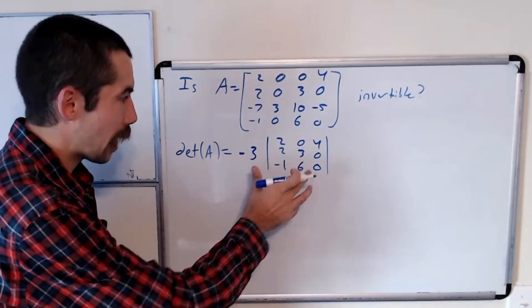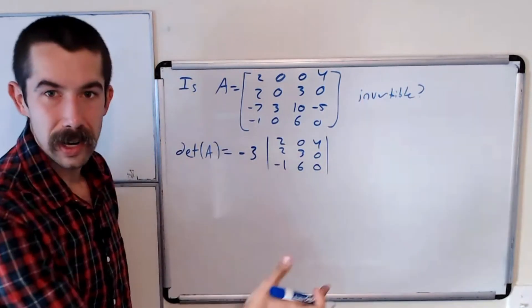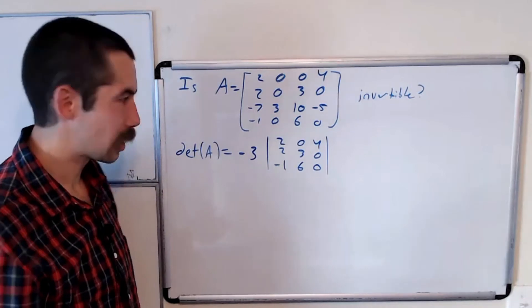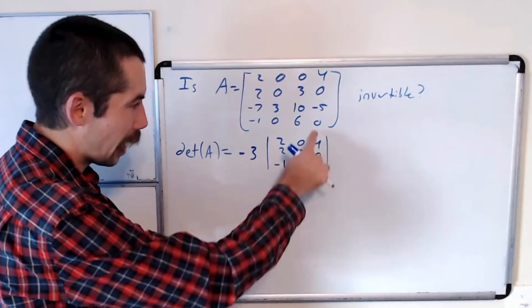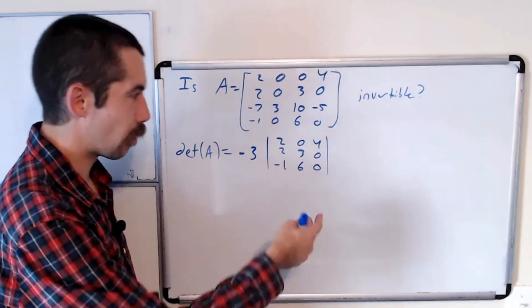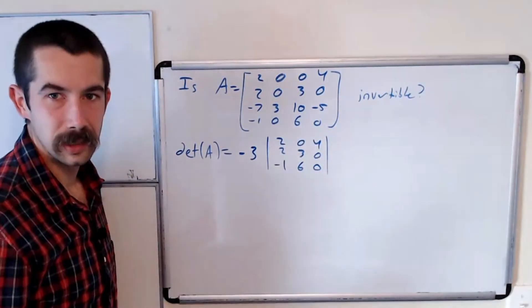Okay, and now our question simplifies to finding the determinant of this three by three matrix, which there's a number of ways to do that. But again, here we have a column with a lot of zeros. So let's do the cofactor expansion down that column.